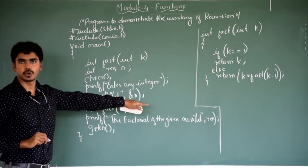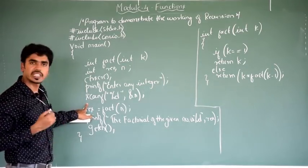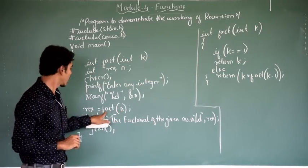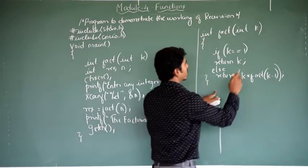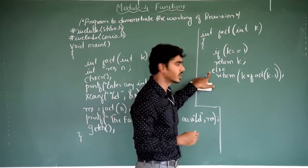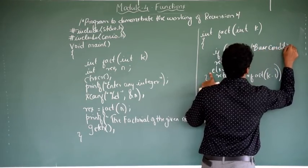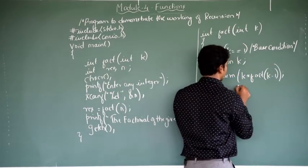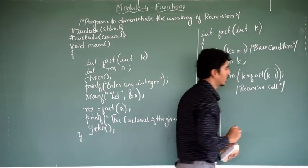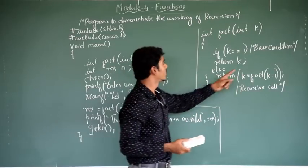This is the end of the program. We are trying to find the factorial of any given integer number using recursion. This is the function prototype, here is the function call using call-by-value, and this is the function definition. This is the recursive function code — these four lines are the recursive function. Here, k == 1 is the base condition, and k * fact(k-1) is the recursive call. The function calls itself again and again until the base condition is met.